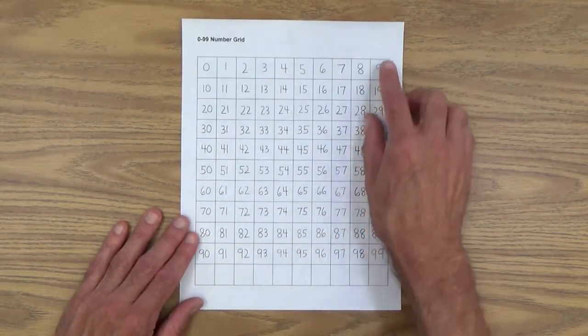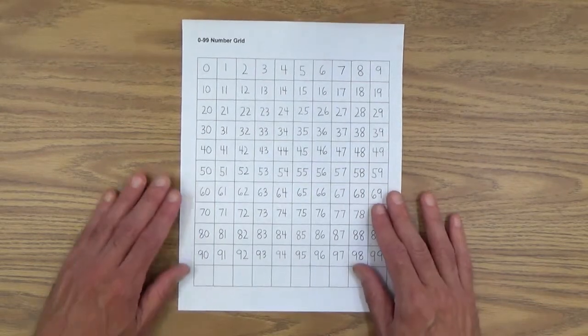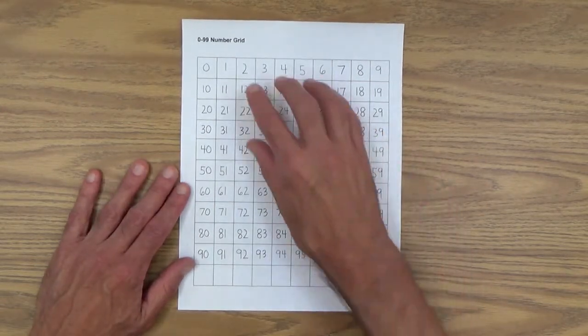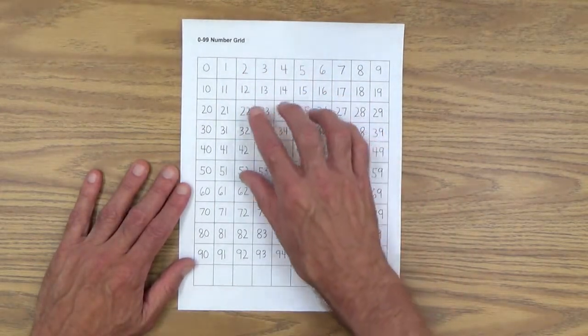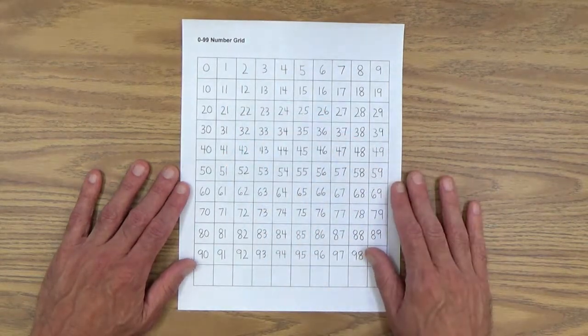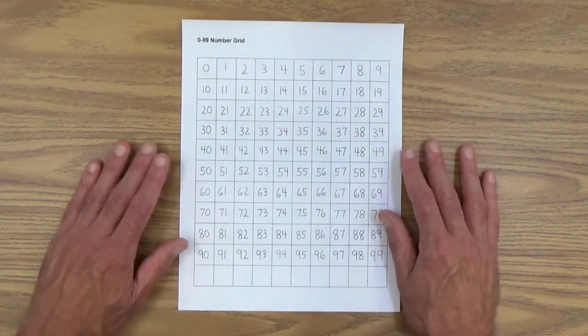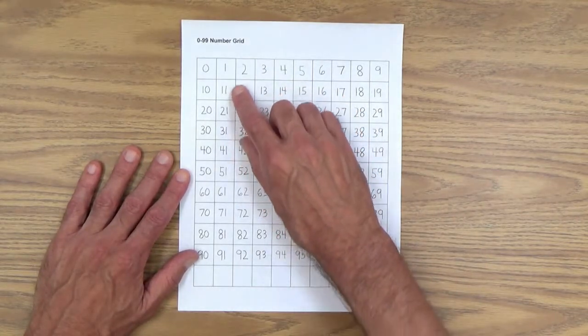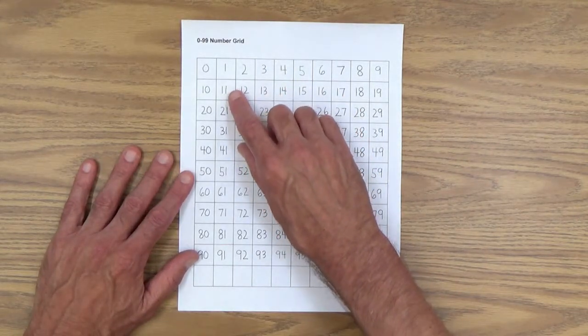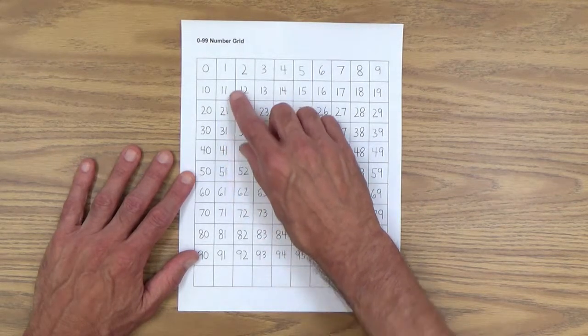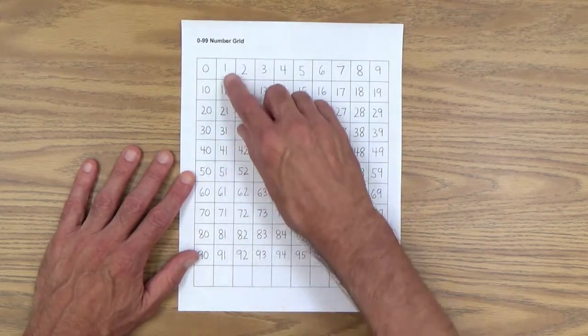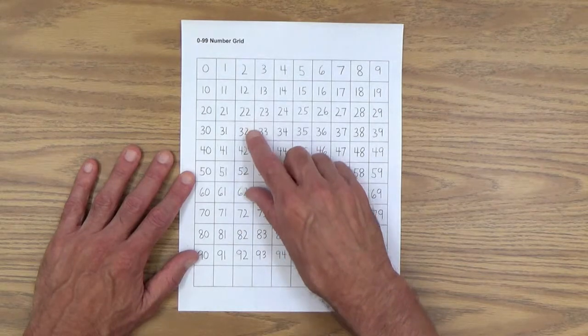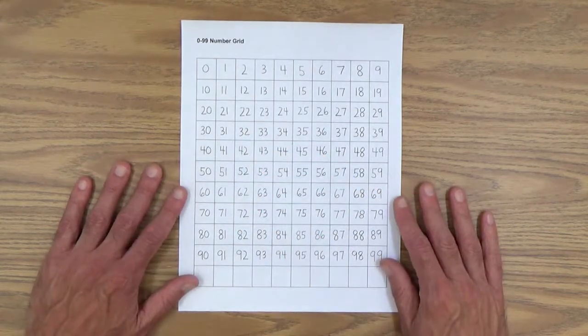Those are the rows. If you go down in the columns, you'll see that we start out with a single digit number and then, of course, a two digit number. The ones digit always stays the same, as you can see. The only thing that changes is the tens digit, and it goes up by one. So working your way down any column, the numbers advance by 10.